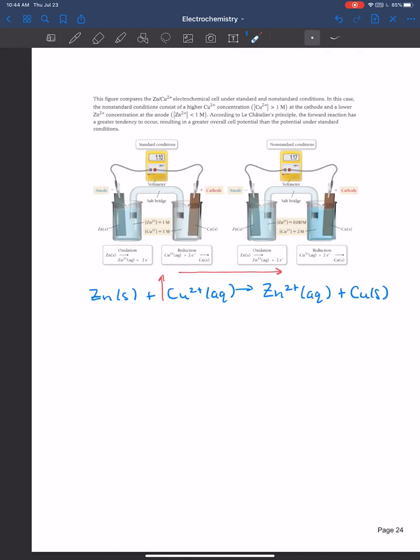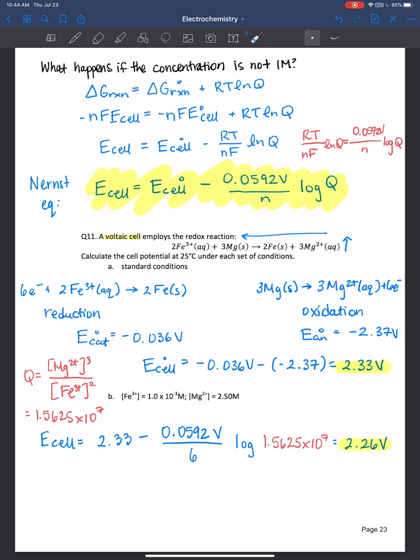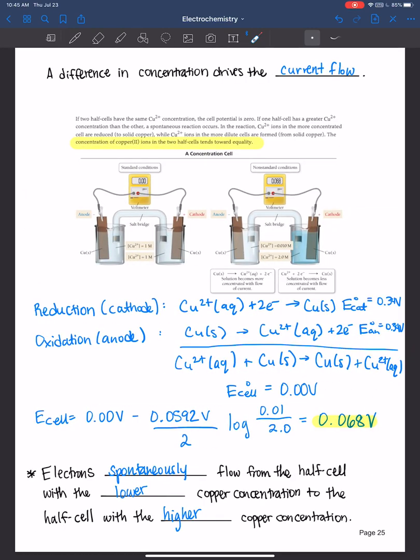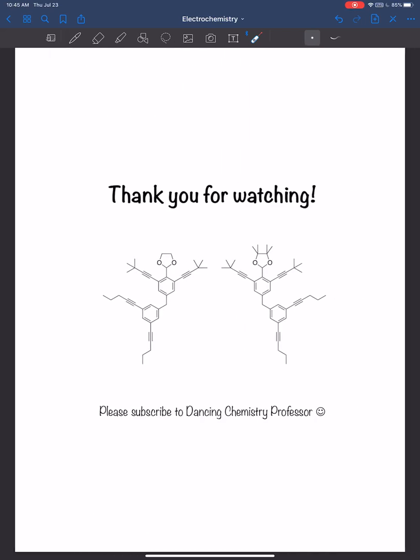So in this video we learned about the Nernst equation, which allowed us to calculate the cell potential under non-standard conditions. We brought in knowledge from our equilibrium unit of Q, the reaction quotient, which is products over reactants. Only use aqueous or if you have gases you can do partial pressures for Q, but never liquids or solids. We also needed to figure out the moles of electrons transferred and remember how to calculate the cell potential under standard conditions. And so we can see by changing concentrations we can definitely affect the current in the cell potential. We saw that in this zinc-copper voltaic cell in addition to a concentration cell where it was both copper, copper two plus ions, and both the anode and cathode, and just changing the concentrations. We saw how it drove the current flow. Thank you all for watching and I'll see you next time.